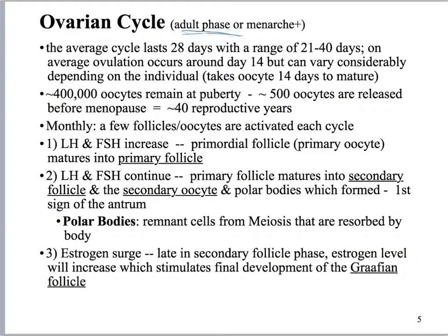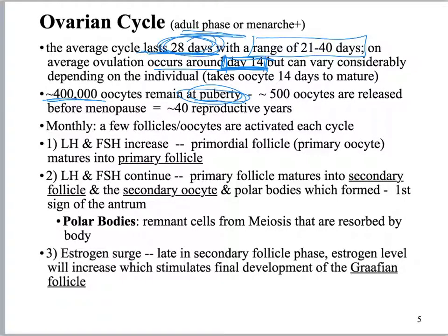Now we're going to be in the adult phase — this is the reproductive age. We're talking about the ovarian cycle, which on average lasts 28 days, with a range of 21 to 40 days. Most women don't fall right at 28 days. If you are following that 28-day pattern, then ovulation is going to be around day 14, but this varies with shorter or longer cycles.